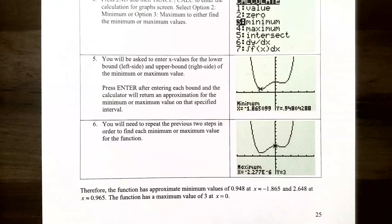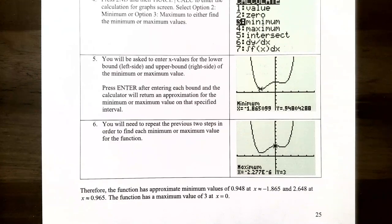This finishes our video on finding increasing and decreasing intervals for a function's graph, and also finding the local maximum and minimum values using its graph. If you have any questions about the examples in this video or while working on the homework for this section, please let me know. I'll see you in the next video when we talk about the average rate of change of a function.